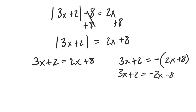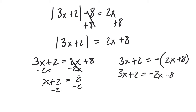Now we can do the math — it's not that bad. I'm going to subtract 2x from the right side so I get my x's on the same side. That gives me x plus 2 is equal to 8. Then I subtract 2 from each side, and x equals 6.